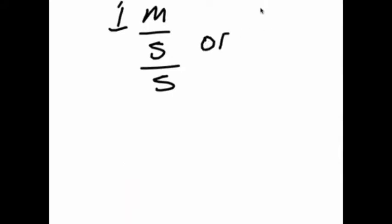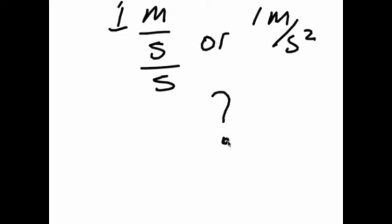So, if you change your speed by speeding up 1 meter per second, then you write it 1 meter per second per second, or 1 meter per second squared. That seems weird. Why is meters per second per second the same as meters per second squared?